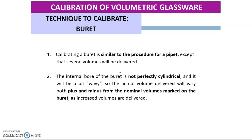Unlike a pipette — if we have a 50 ml pipette, it can only deliver 50 ml volume. But a 50 ml burette can deliver several volumes, so we need to calibrate and measure the mass of each volume delivered.